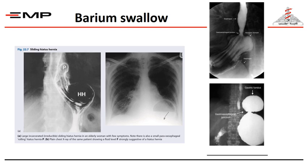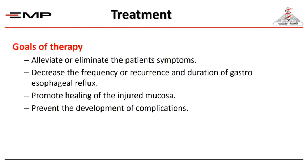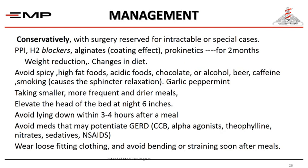Here is another barium swallow showing hiatus hernia. If the gastroesophageal junction is above the diaphragm, it is a sliding hiatus hernia as seen on the right side. The treatment of gastroesophageal reflux disease aims to alleviate patient symptoms, decrease the frequency and recurrence of reflux attacks, promote healing of injured mucosa, and prevent development of complications. We usually start with conservative treatment.